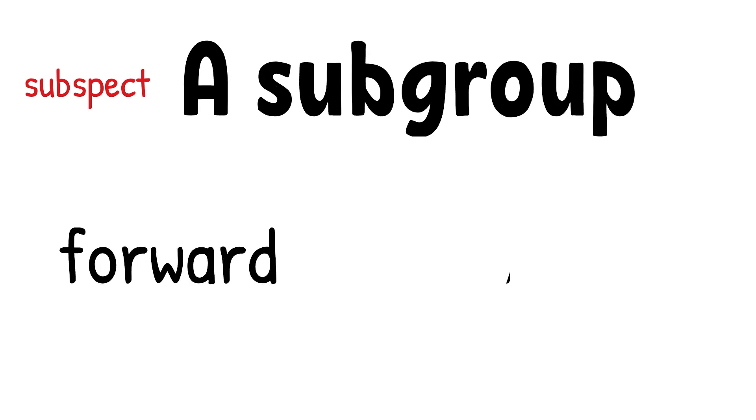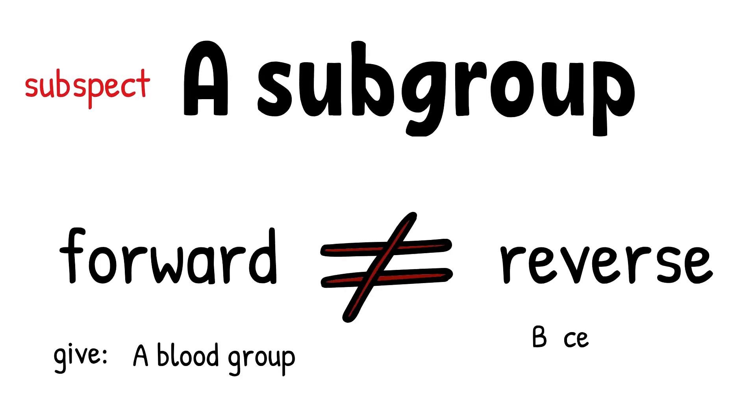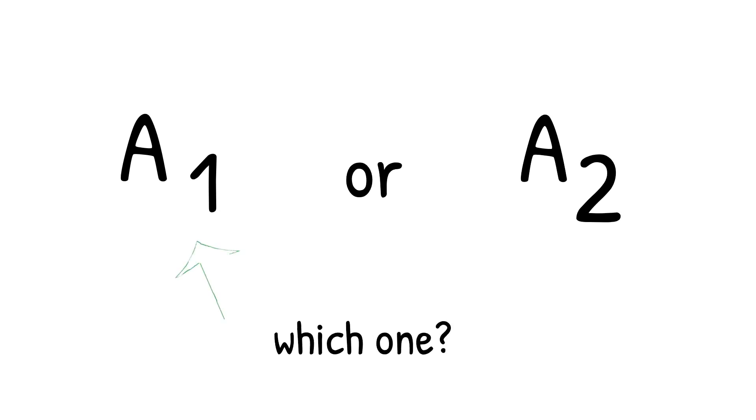We can suspect A subgroup when the forward gives A blood type and the reverse gives a strong reaction with B cells but a weak reaction with A1 cells, which means the individual may have one of the A subgroups with anti-A1 antibody. We already talked about how the reaction should look like for group A blood type, but how can you tell if the patient is A1 or A2? Is there a way to tell that? Yes, you can and let me tell you how.